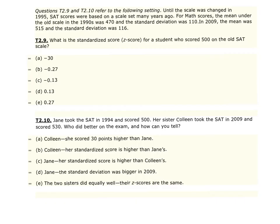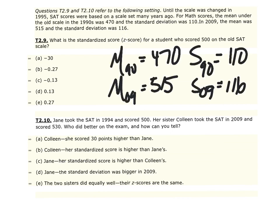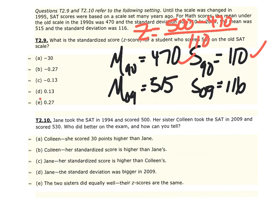Questions 9 and 10 go together. Until the scale was changed in 1995, SAT scores were based on an old scale. For math scores, the mean in the 1990s was 470 with a standard deviation of 110. In 2009, the mean was 515 and the standard deviation was 116. Question 9: What is the standardized score for a student who got 500 on the old scale? We compute the z-score: (500 - 470) / 110, which gives a z-score of 0.27.